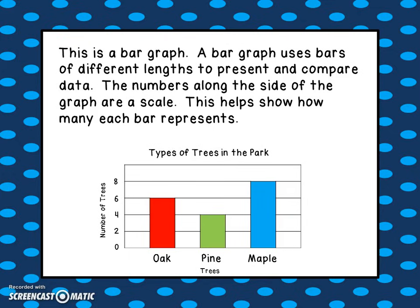If they wanted to represent a number that wasn't on the scale — say five or seven — that bar would only go halfway up. So if the value was five, the bar would land in between the four and the six.